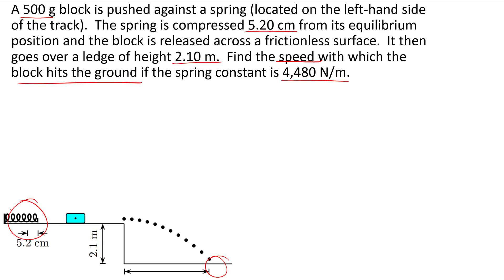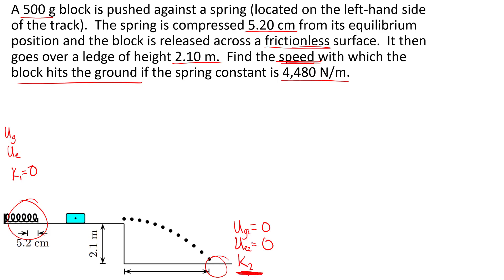Let's think about this in terms of energy, especially since there's no friction. When the spring is fully compressed, kinetic energy is zero. We have spring potential energy because the spring is compressed, and we have gravitational potential energy because we are above some height. At the bottom, gravitational potential energy is zero because we're at the lowest point, elastic potential energy is zero because the spring is no longer compressed, but we are moving so we do have kinetic energy. Using conservation of energy, we can find our unknown speed.